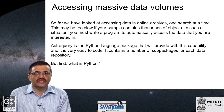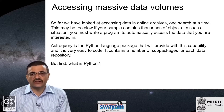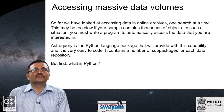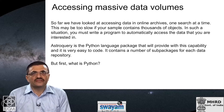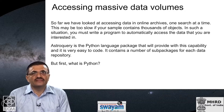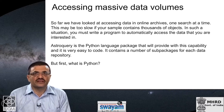In such a situation it is better to write a program which can automatically access the data that you are interested in. The module or piece of code that allows you to do that is called astroquery, and it is a Python language package that provides you with this capability. It contains a number of sub-packages for each data repository — a separate sub-package for accessing SDSS data, a separate one for accessing catalogs in Vizier, and so on.